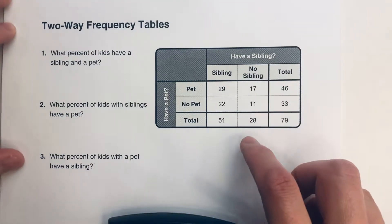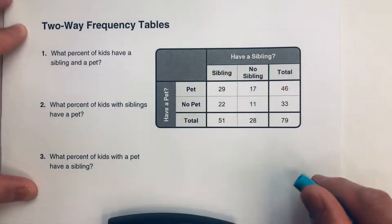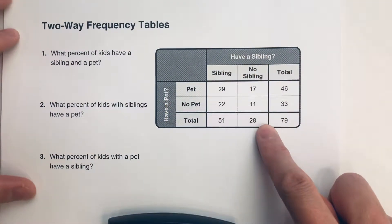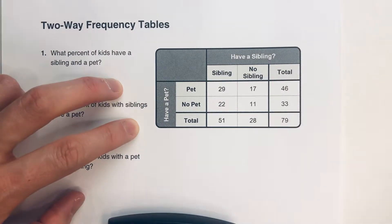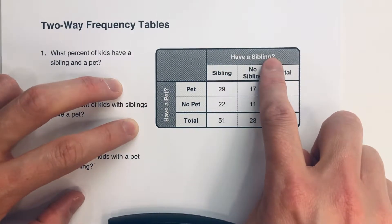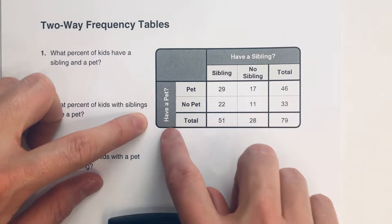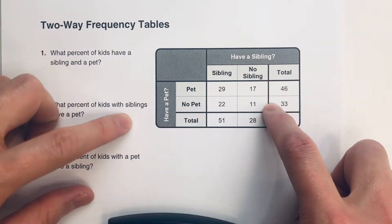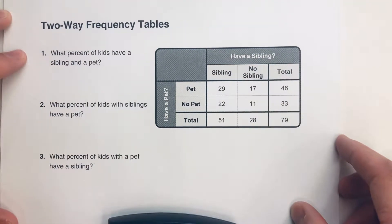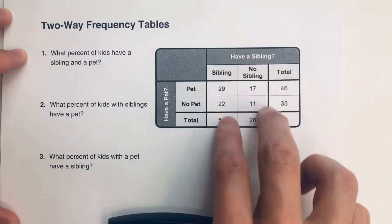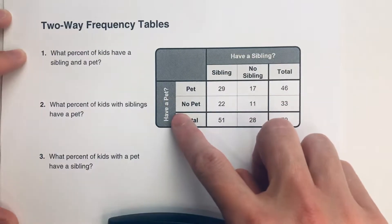Today we are solving problems about two-way frequency tables. Here's an example table showing the results of a survey where we asked kids two questions: do you have a sibling, and do you have a pet? That's how a two-way frequency table works — you can read it in two different directions. Vertically, it tells us about siblings; horizontally, it tells us about pets.